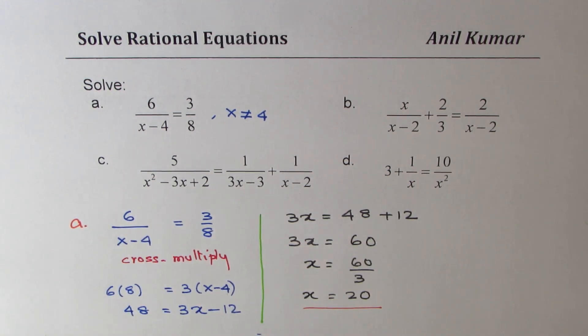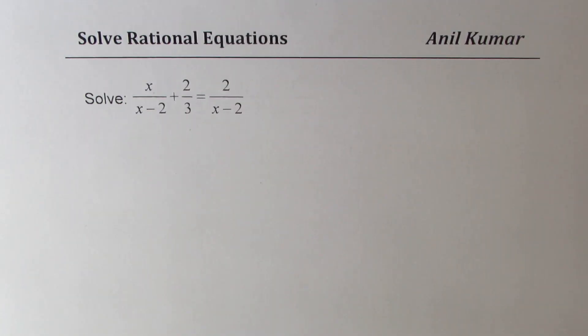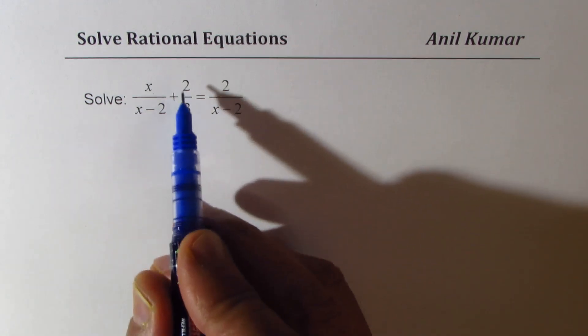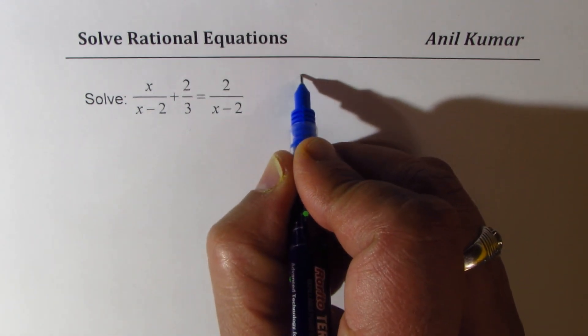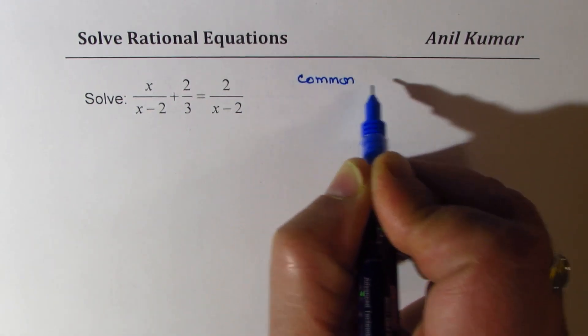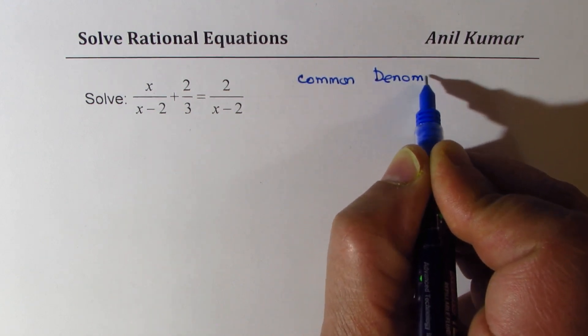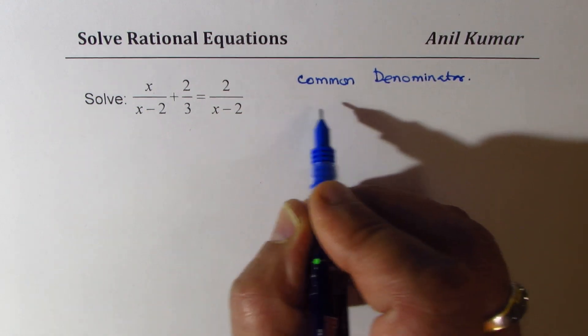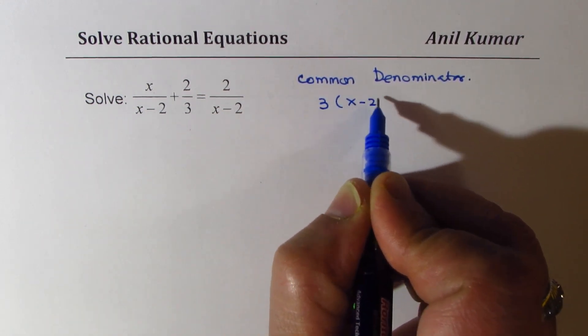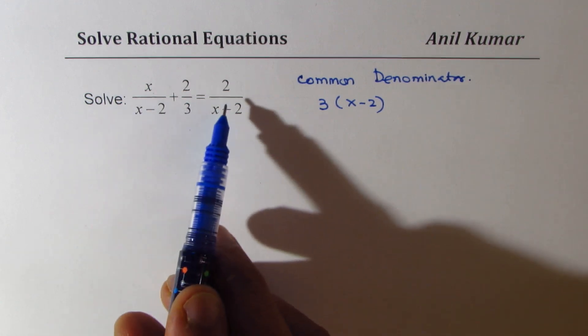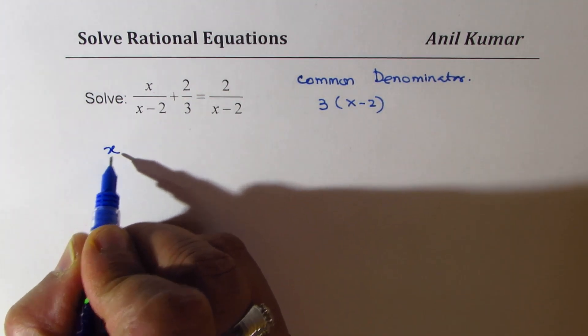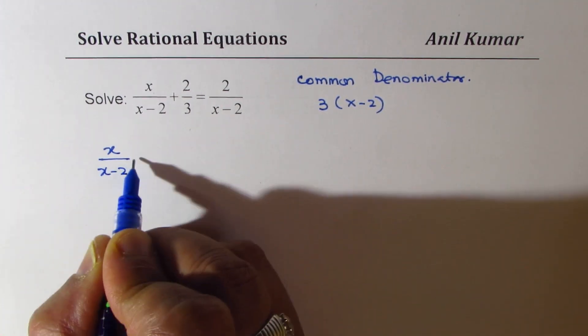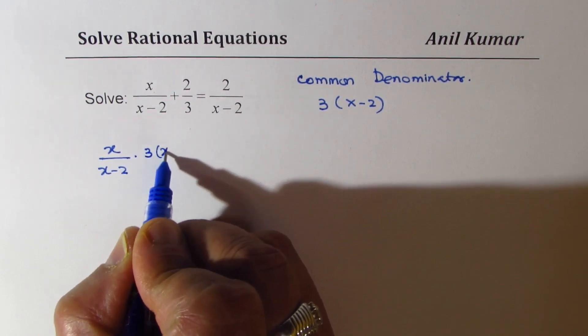Now, let us take up part B. Slightly more complicated equation. So it is x over x minus 2 plus 2 over 3 equals to 2 over x minus 2. Now, we need to look into the common denominator. It is 3 times x minus 2. So we will multiply each term by this denominator.